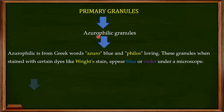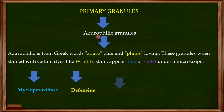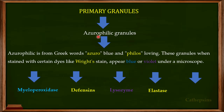The important components of the primary granules include myeloperoxidase, defensins, lysozymes, elastase, and cathepsins.